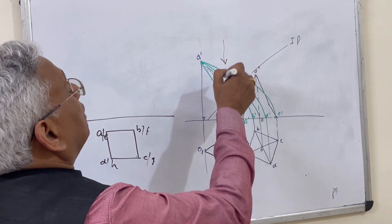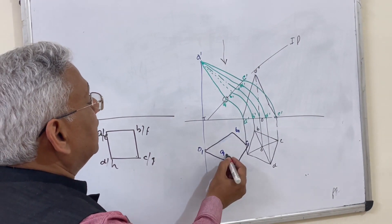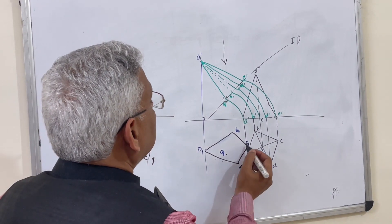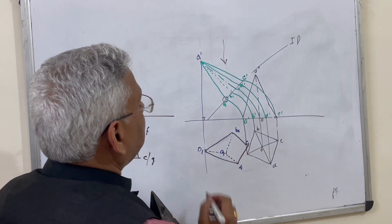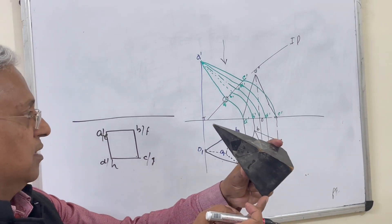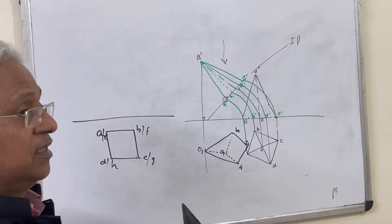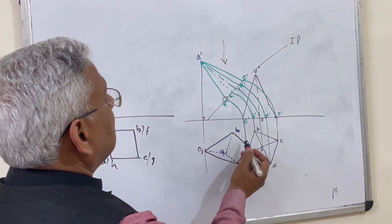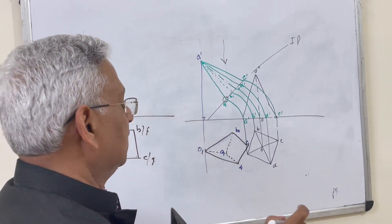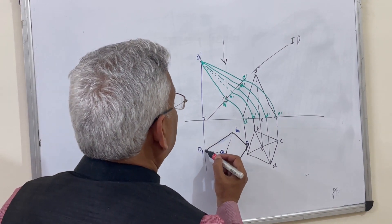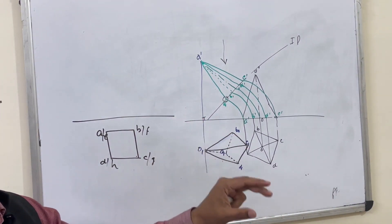Since A1 is the lowest point when viewed from the top, it is not visible to the observer, so all lines meeting at A1 must be dotted lines: edges AB, AD, and OA are hidden. Next, checking for any lines crossing these dotted lines — O1C1 crosses a dotted line, and since two lines crossing cannot both be dotted, O1C1 becomes a continuous line. This illustrates how the four rules are applied step by step in drawing projections of solids.